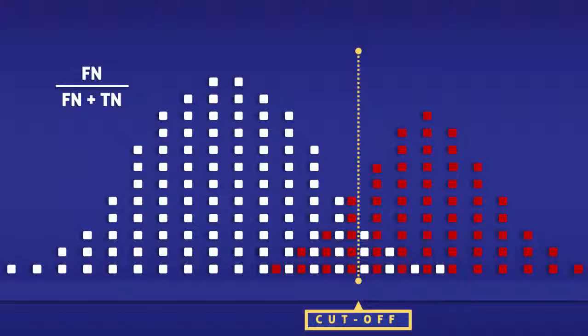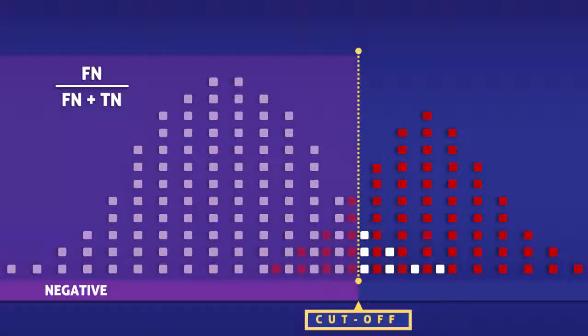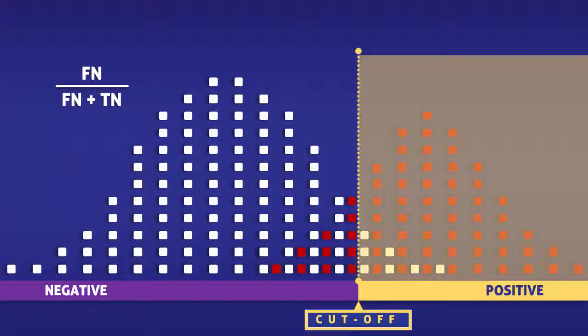This yellow line represents a cutoff level for a test. To the left of the line, the test returns negative, and to the right, it returns positive.